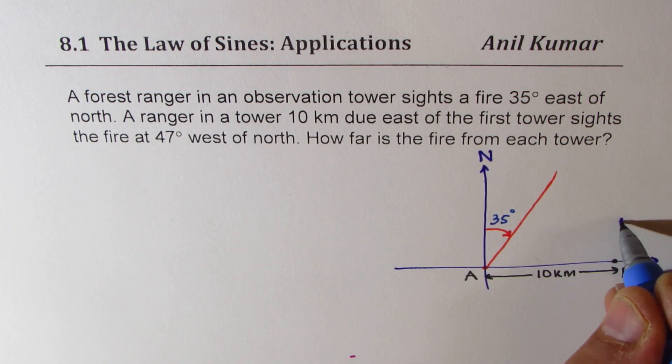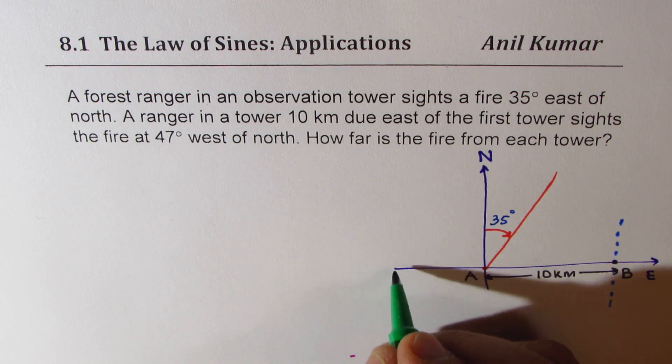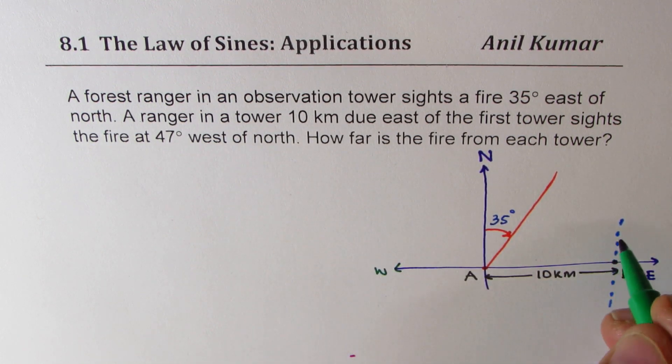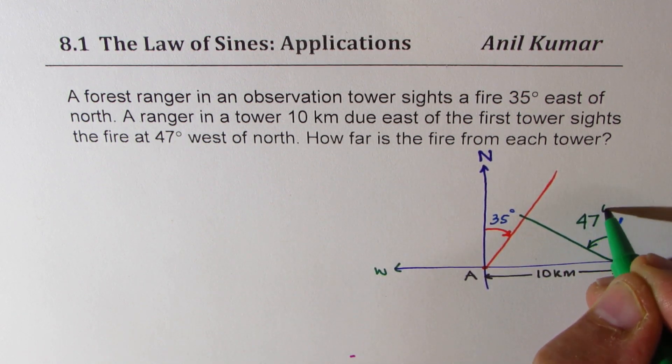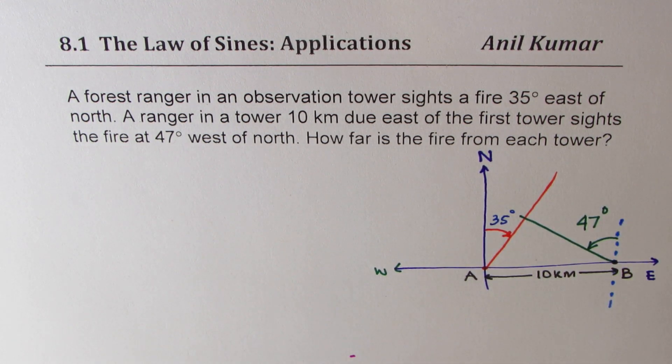So how do you sketch that part, that is critical. Draw a line parallel to your north and make 47 degrees west. So west is this side. So from here, 47 degrees west will be kind of like this. So this angle here will be 47 degrees. That is how you should be sketching the diagram to solve this particular question.